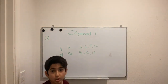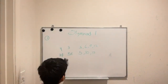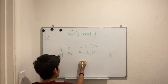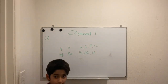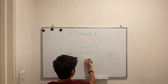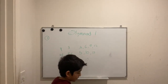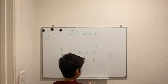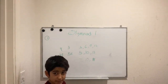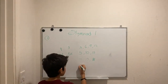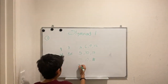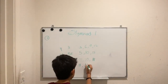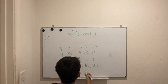Now the combinations of both: one 3-cent and one 5-cent equals 8; one 3-cent and two 5-cents equals 13; one 3-cent and three 5-cents equals 18. Then two 3-cents (6 cents) and one 5-cent equals 11; two 3-cents and two 5-cents equals 16; and two 3-cents and three 5-cents equals 21.